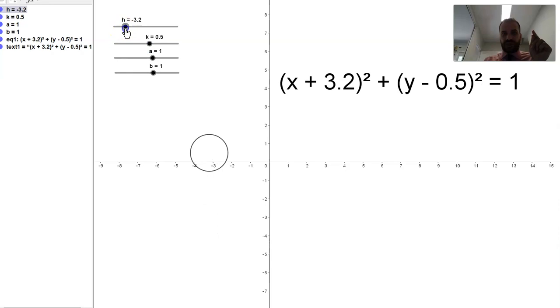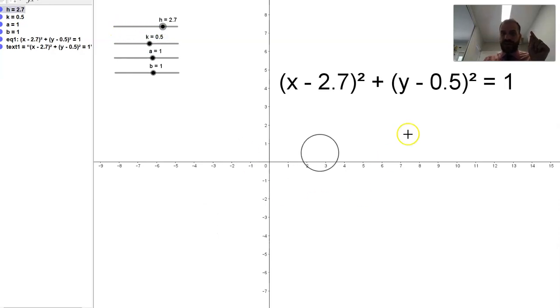The center of our circle right now is positive 2.7, negative 0.5. So there's our little center, and you can see it changing as we move up and down.